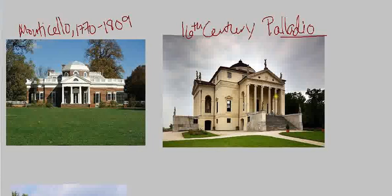You can really see a clear reference to this architect whom Thomas Jefferson very much admired. This is his private residence, and it was an ongoing project for Thomas Jefferson — but it was really a labor of love.